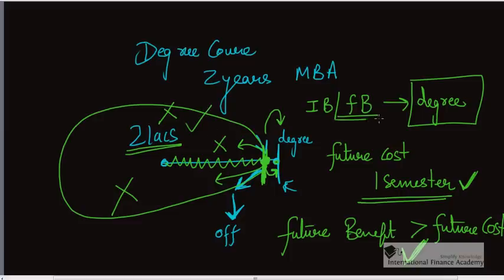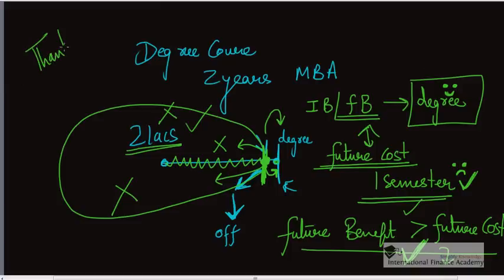Don't consider sunk cost. Only consider future benefit and future cost and compare against them to decide whether to continue or drop off. In this case you must continue, because future benefit of getting a degree is much higher than spending one more semester worth of studying the same old boring courses that you never liked. So with that we got the concept of not just sunk cost, but how it is used in decision making. Thank you.